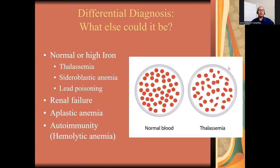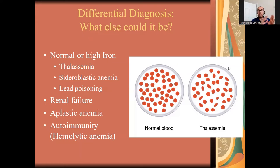Differential diagnosis asks: what else could it be? Let's say you are tired, fatigued, have headaches, and do have anemia — but what if it's not iron deficiency? That is a possibility, because there are different forms of anemia. In lab work we'll see different values. Just as we saw low iron in iron deficiency anemia, these other forms of anemia can actually show high iron. Remember, anemia just means low red blood cell count — it doesn't mean low iron count. So you may have normal or high iron but still have low red blood cell counts.